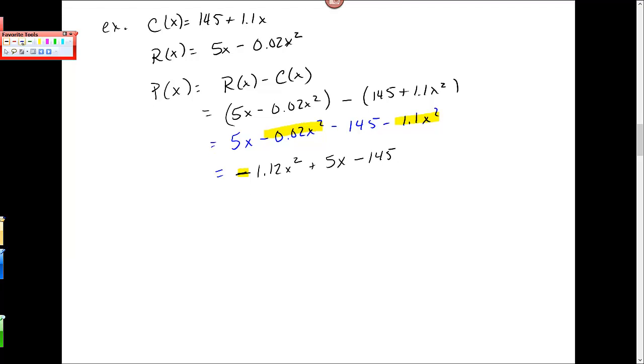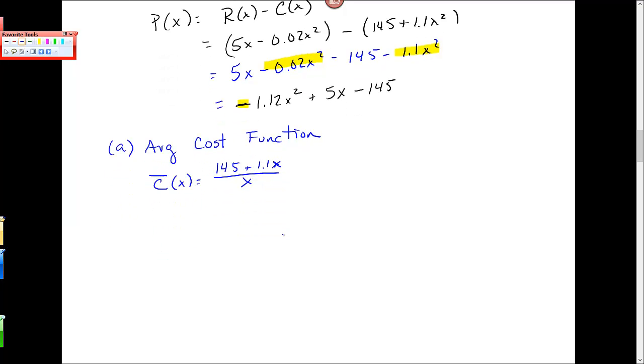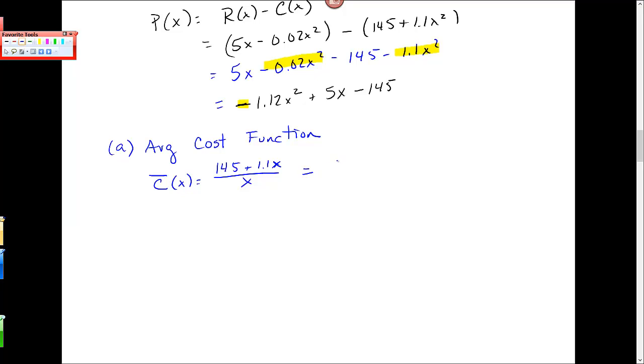So if we want to find, let's just find some of these like average cost function. C̄(x) is equal to (145 + 1.1x) all divided by x. If I wanted to find the marginal average cost function, this is the same thing as dividing these individually. So taking 145, dividing it by x plus 1.1x over x. Which is also the same thing... in this second piece, these will cancel. So there's no x there. It looks something like this.